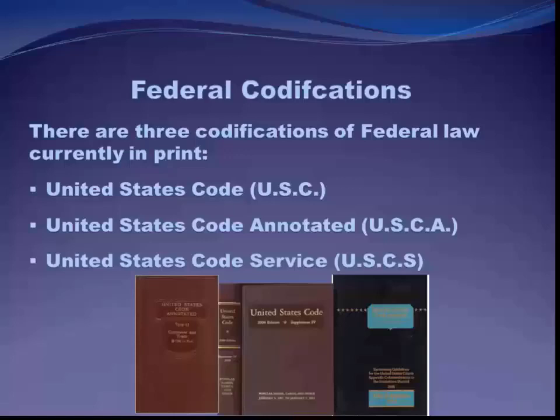Codes are grouped into broad subject titles, then within each title divided into chapters and numbered sections. Note that sections of a legislative act may be grouped together in the code or scattered across two or more titles. Codes are almost always where you want to turn when conducting legal research, as only the code reflects the current state of the law including amendments and repealed laws. The three main sources of federal law are the United States Code, the United States Code Annotated (on Westlaw), and the United States Code Service (on Lexis).